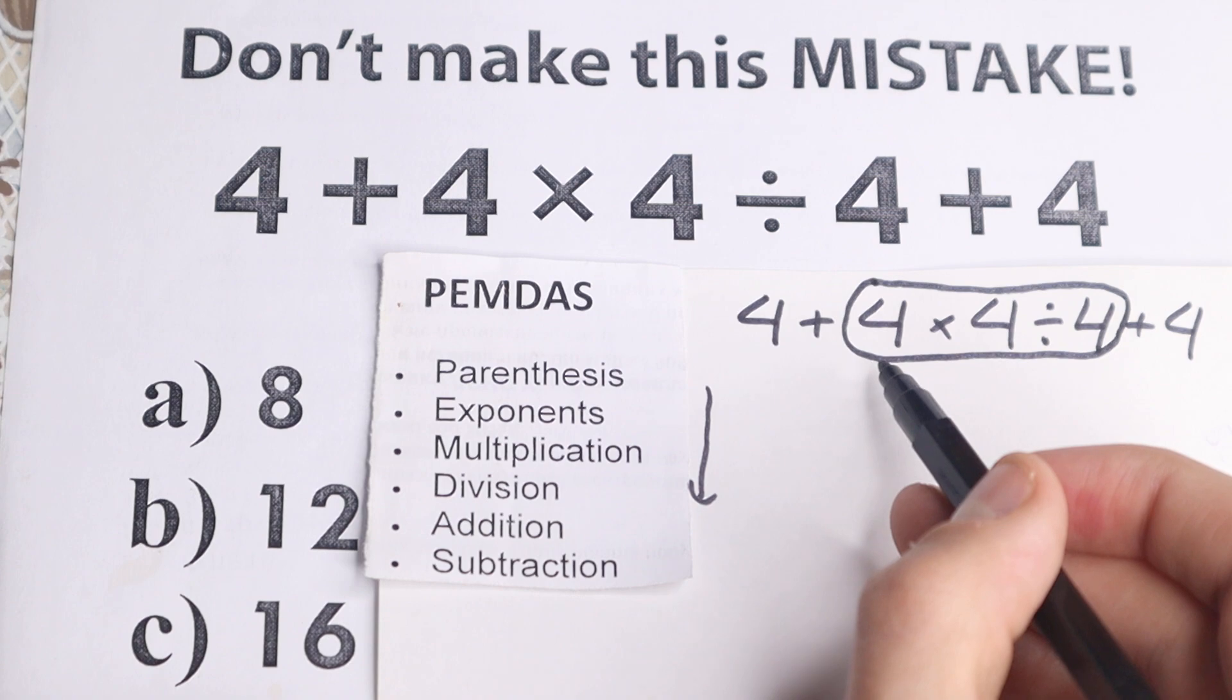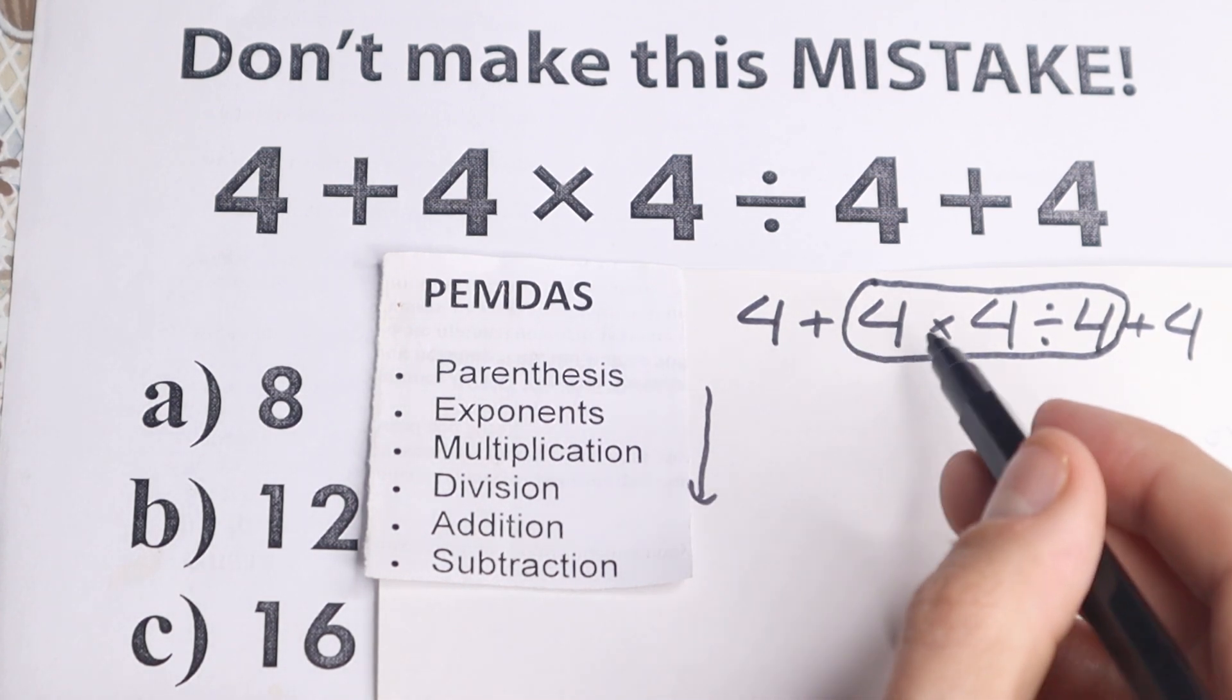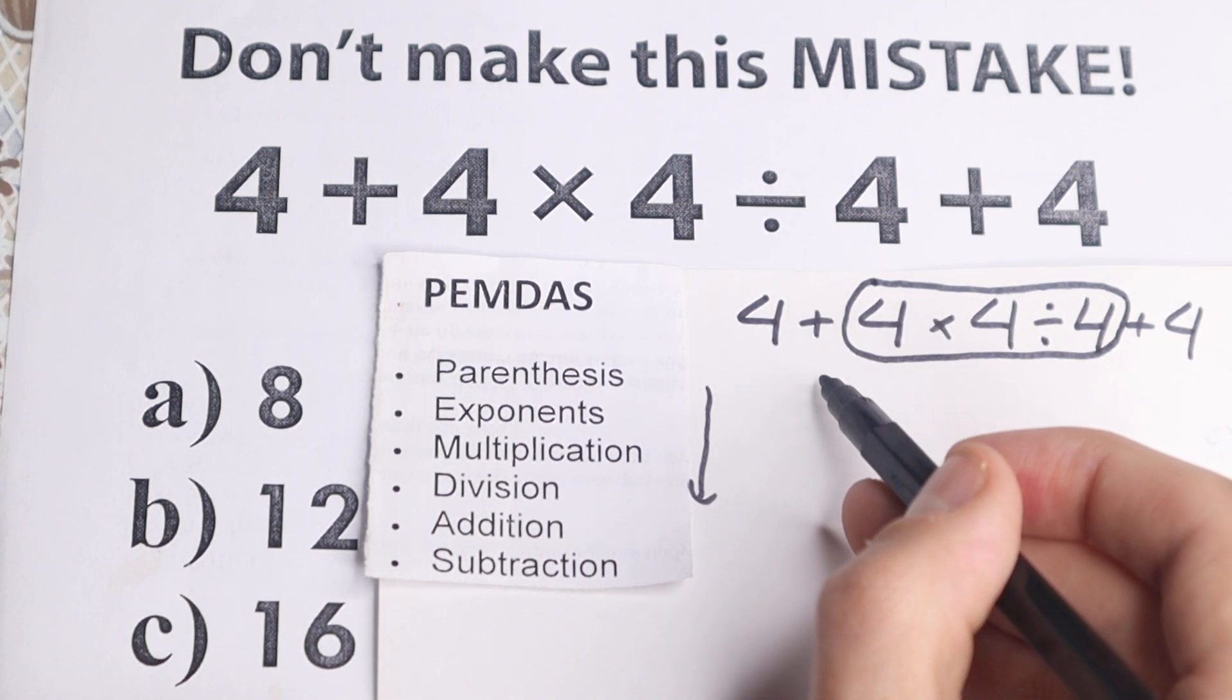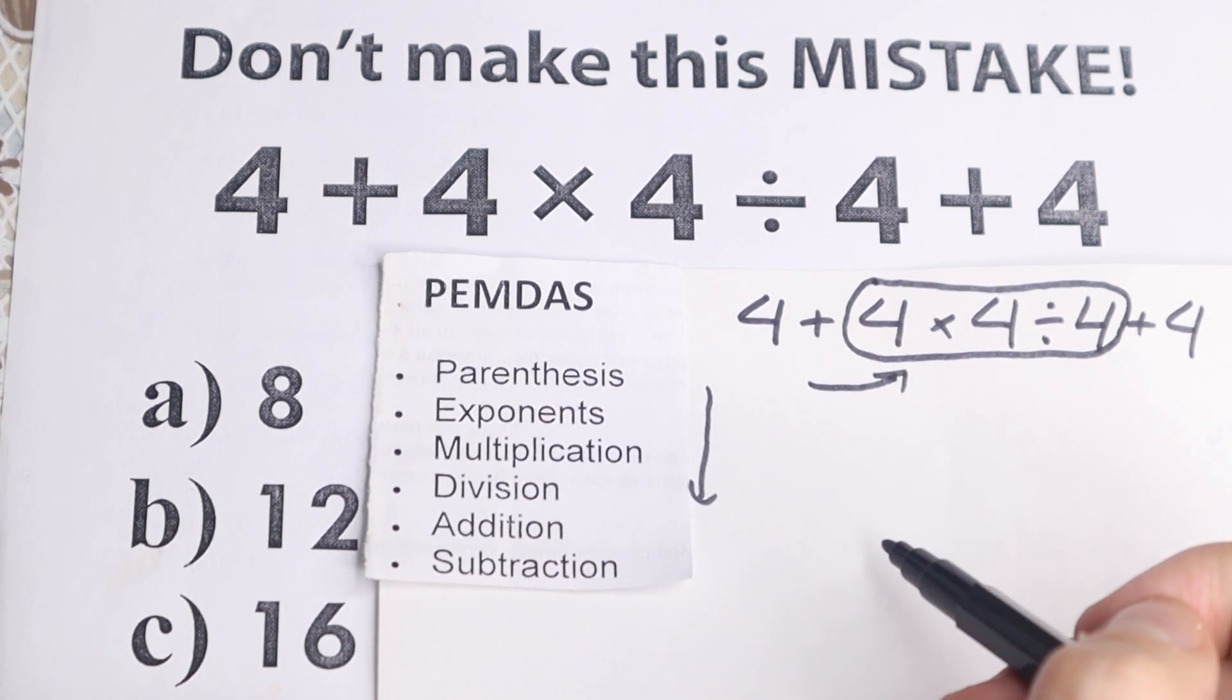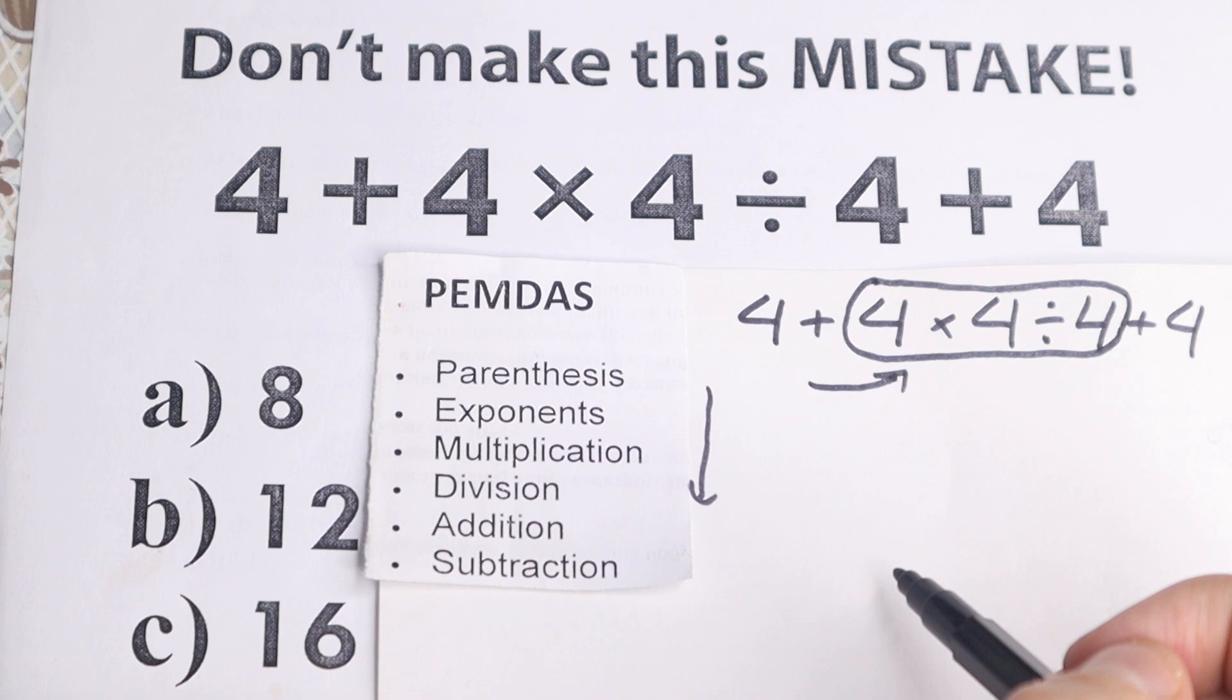We need to scan what is the first sign from left to right in this case, multiplication division right here, what is the first sign from left to right? The first sign from left to right is this multiplication, so we need to multiply it first.